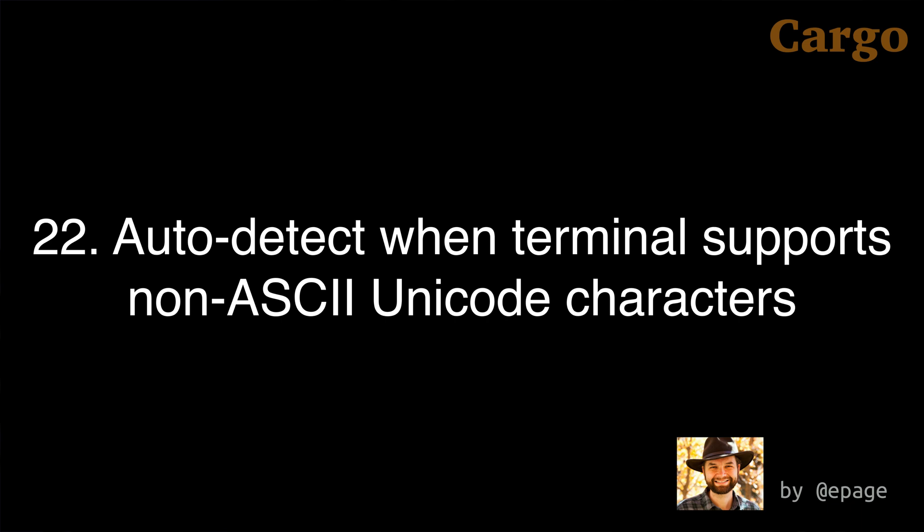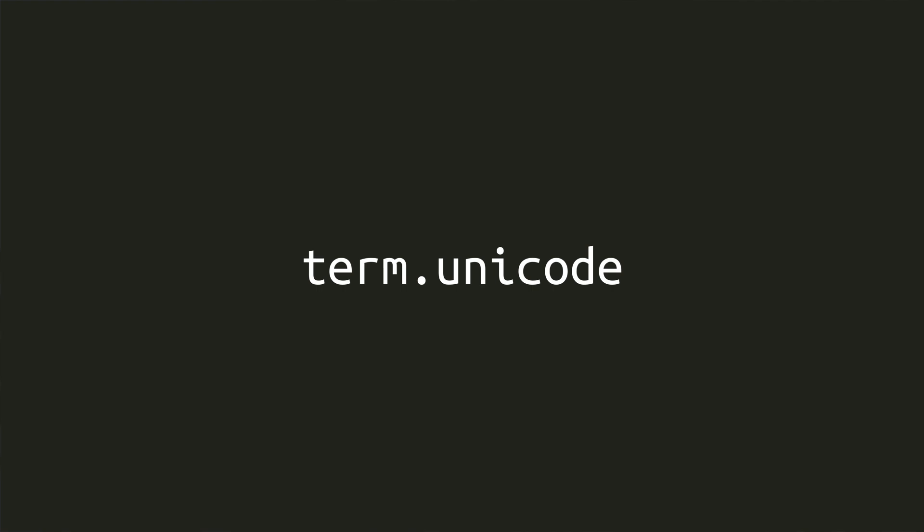Number 22: Cargo now auto-detects when the terminal supports non-ASCII Unicode characters. In the future we may see fancier progress bars, fancier warning output, fancier feature lists, and fancier tables. If you need to manually override the auto-detected setting, you can set the new term.unicode field in cargo.toml.